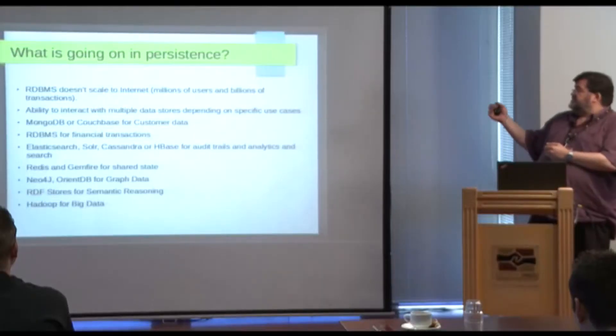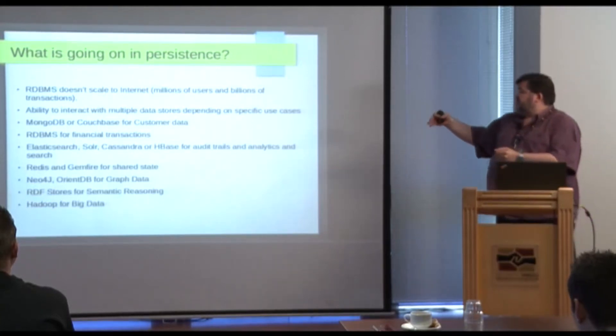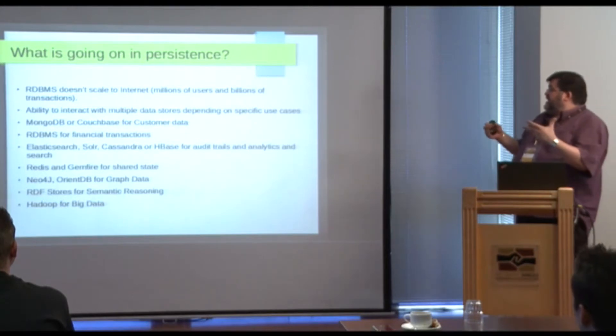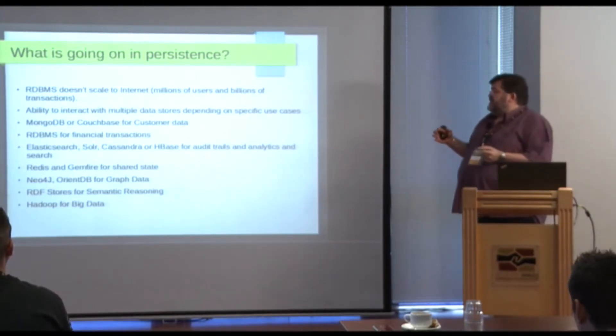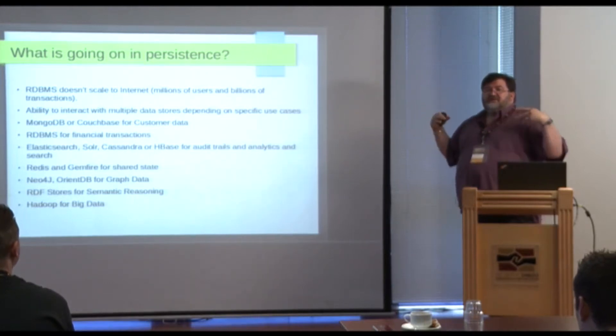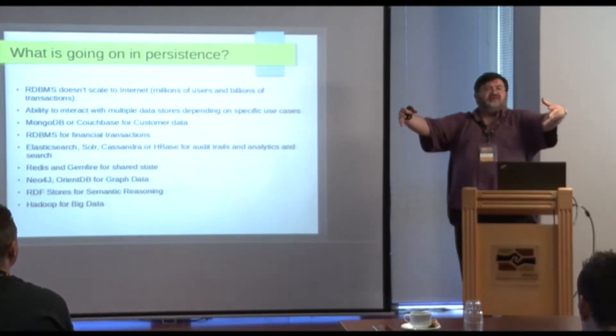If you want to store financial transactions, especially if you want to operate on them afterwards, an RDBMS is still the best way to do that. Then you get databases like Elasticsearch, Solr, Cassandra, HBase — those are good for audit trails, analytics, and search. They can scale to huge volumes and cluster over a lot of machines. They are very good for putting data in and then later searching it, but they are not good for manipulating the data after you put it in. If you want a different version of the data, you change it and put it in again under a different name.